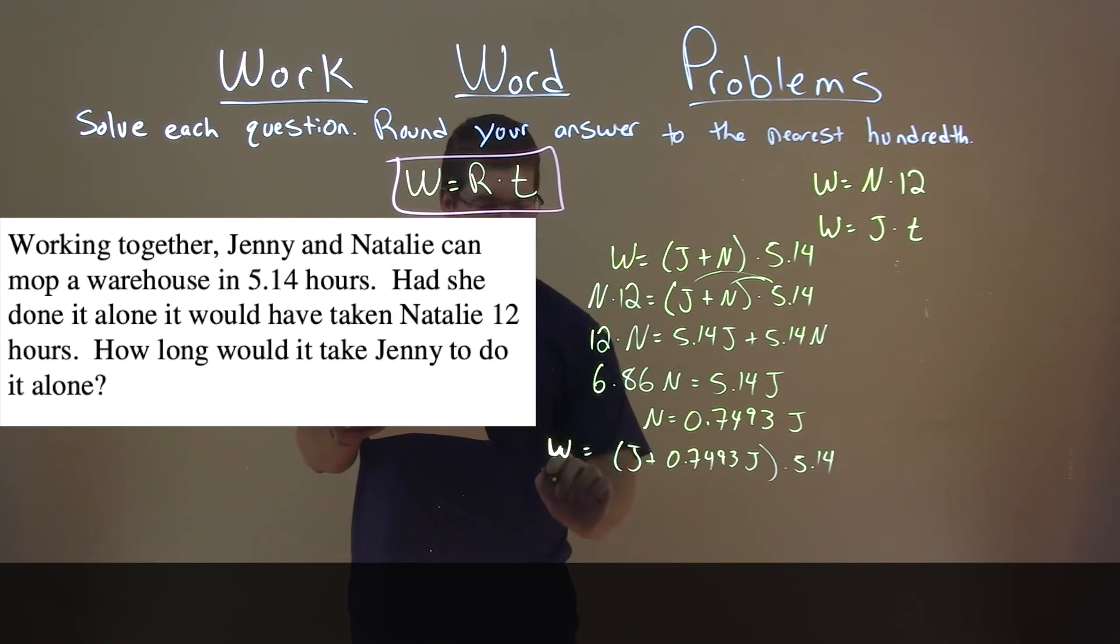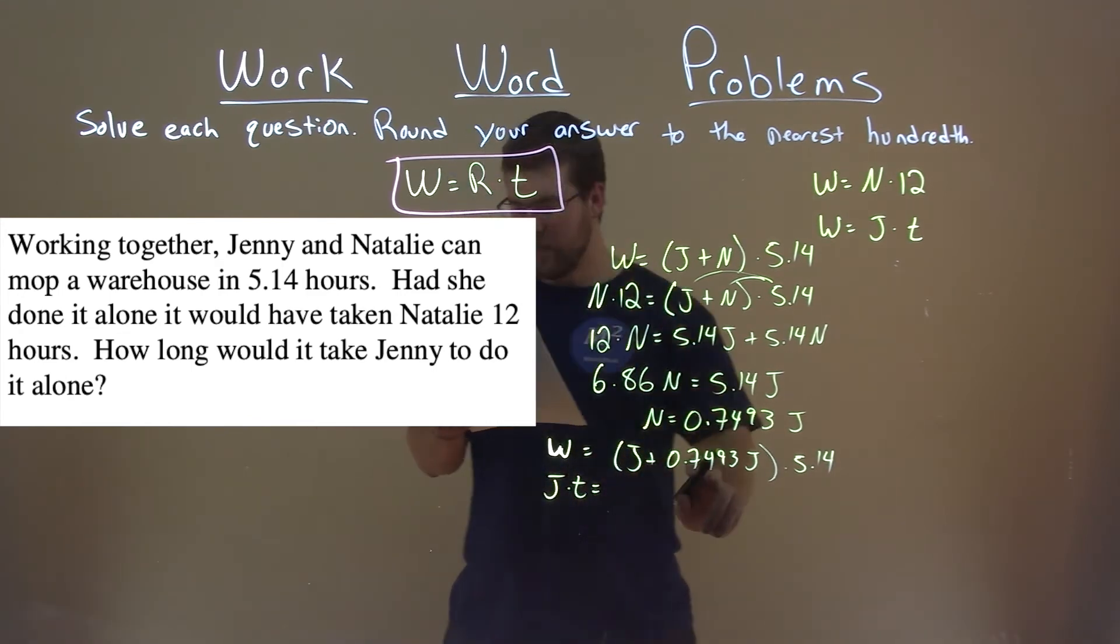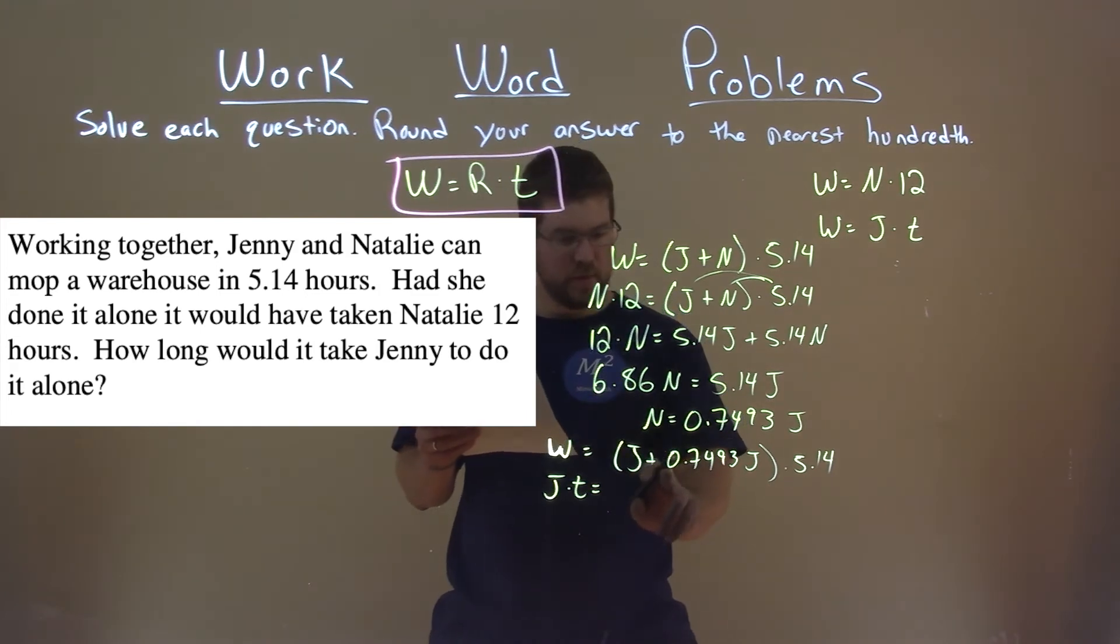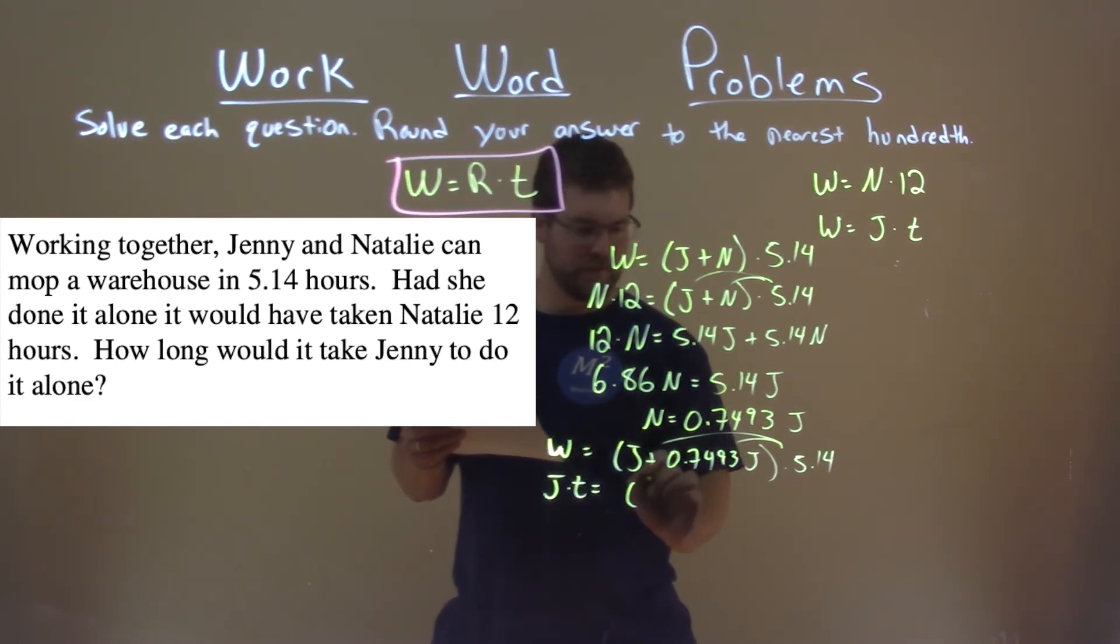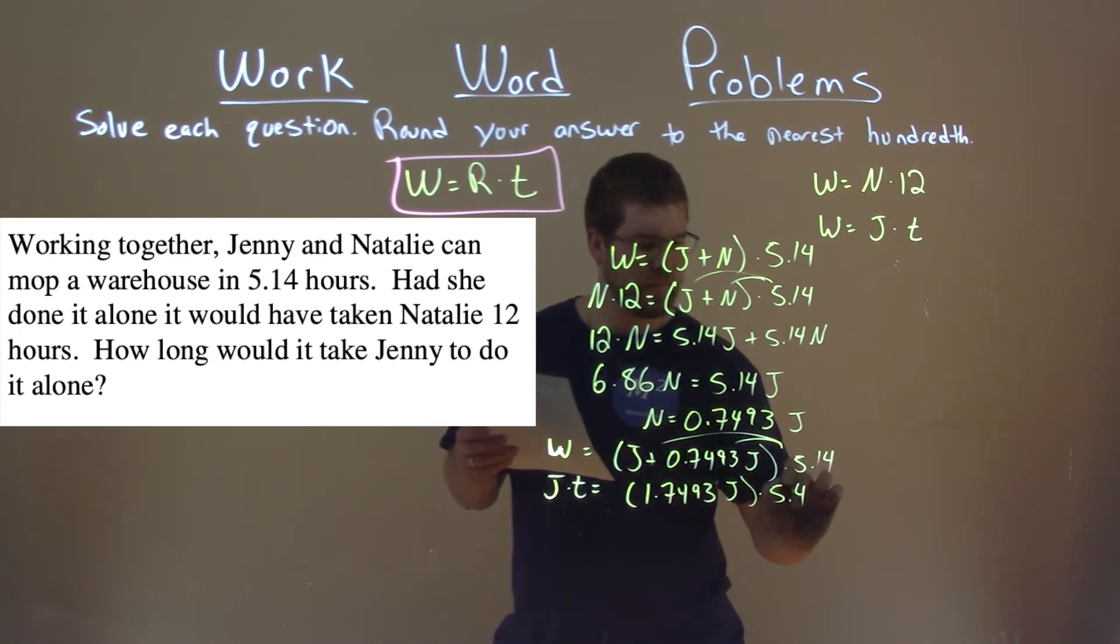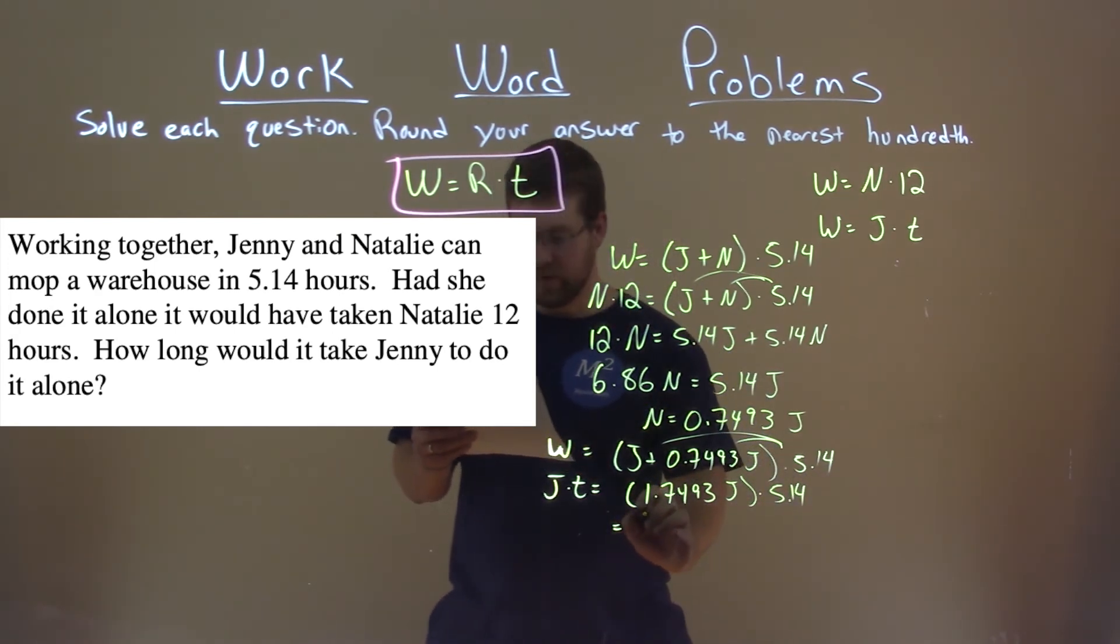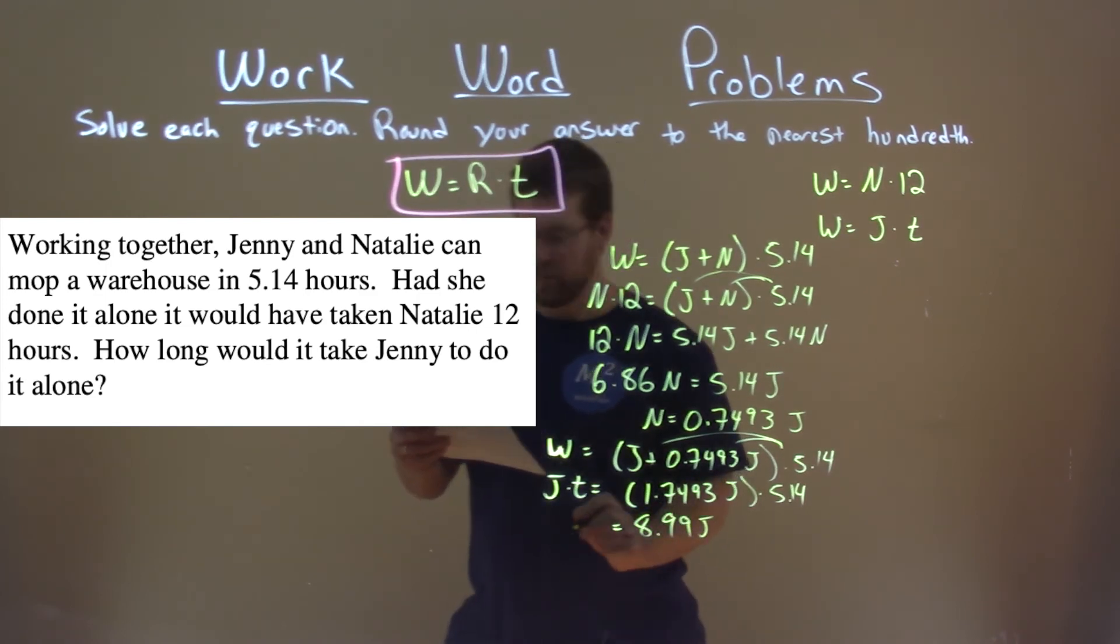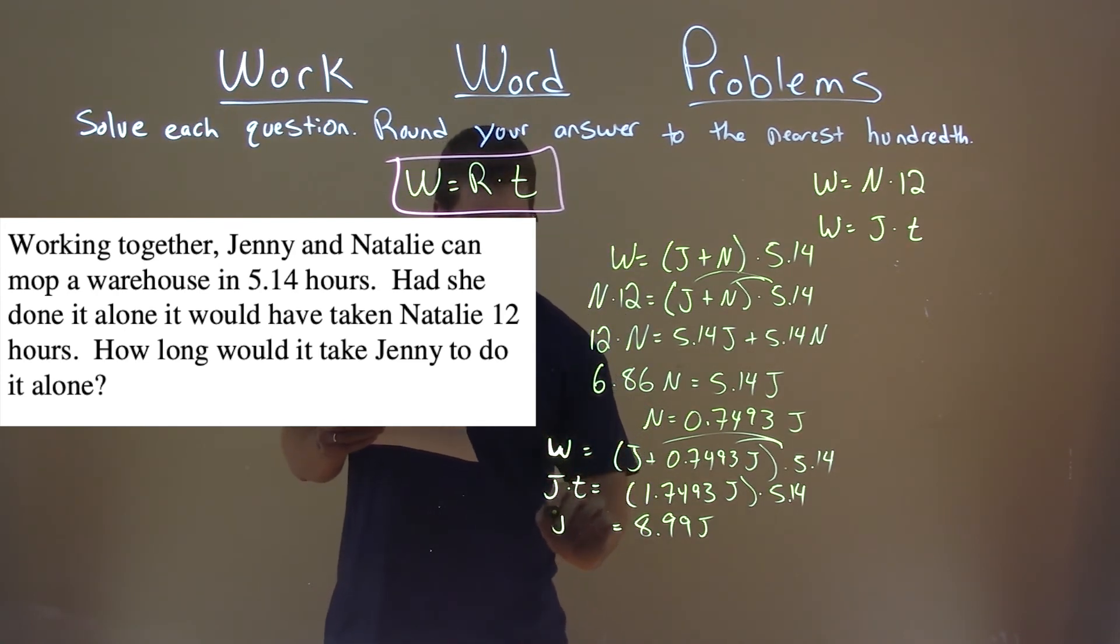So we have J times T here equals, we add these together, J plus 0 point... oh no, why did I distribute that? Anyway, I ended up distributing these two together, and then adding them together. Actually, I won't distribute, silly. We have 1.7493J times 5.14. Now, multiply that out. I don't know why I was doing it the other way. 8.99J, glad I caught myself. And we have J times T.